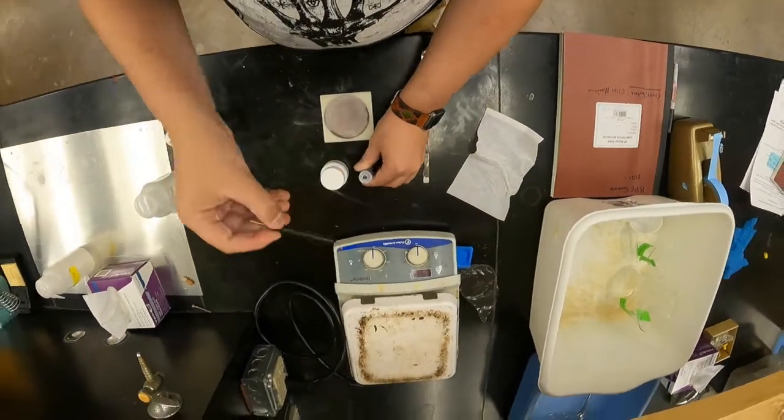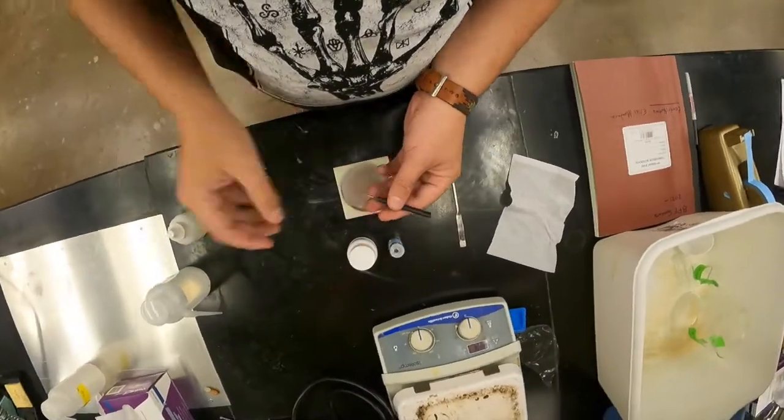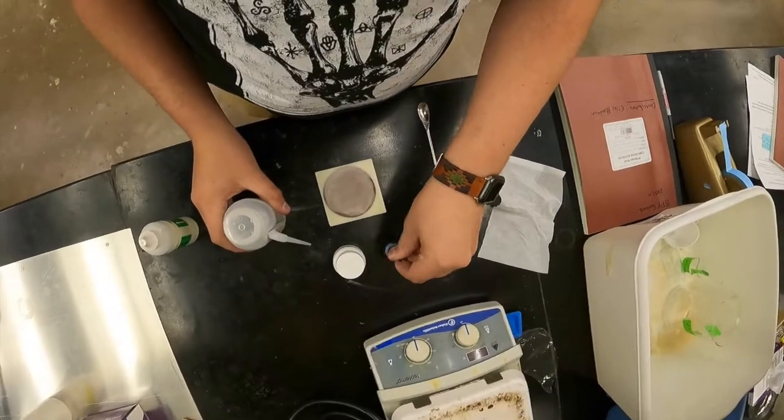For the working electrode, before you do anything else, you're going to want to polish it. So to start, you're going to store your working electrodes while you're working with them in 18 mega ohm water, just to keep them clean. You're still going to want to polish them in between use.